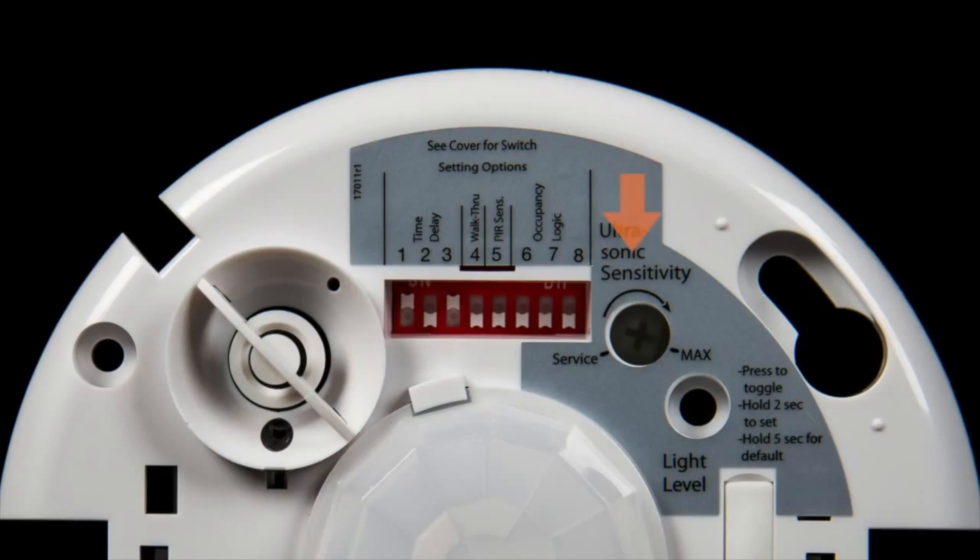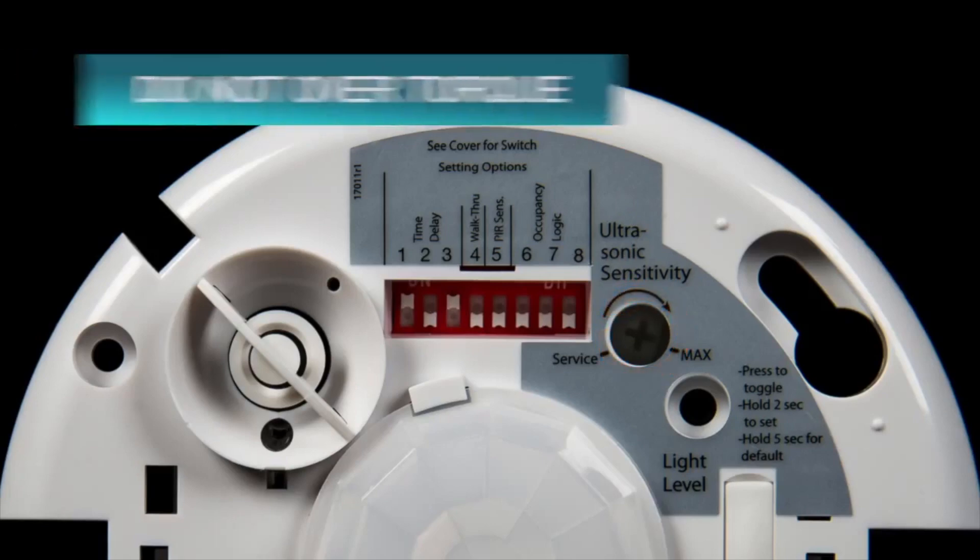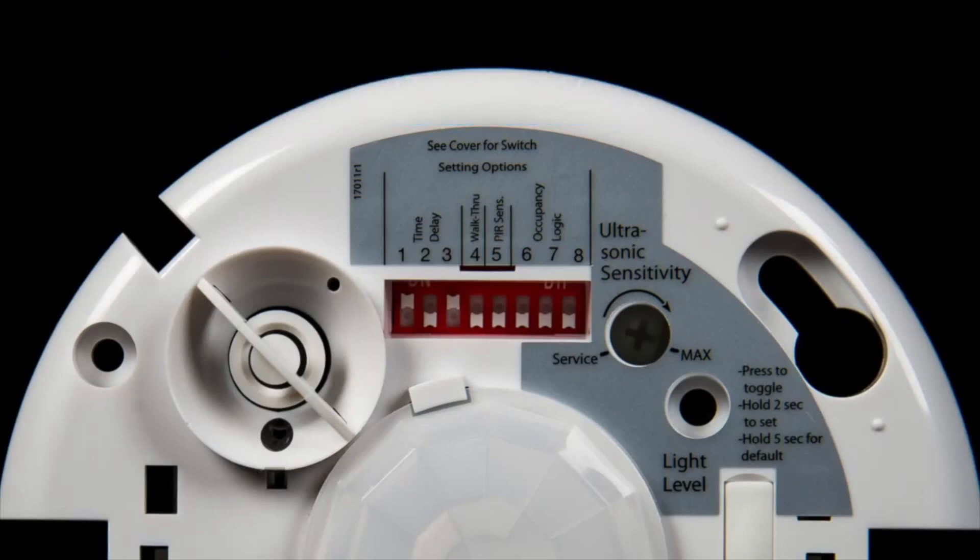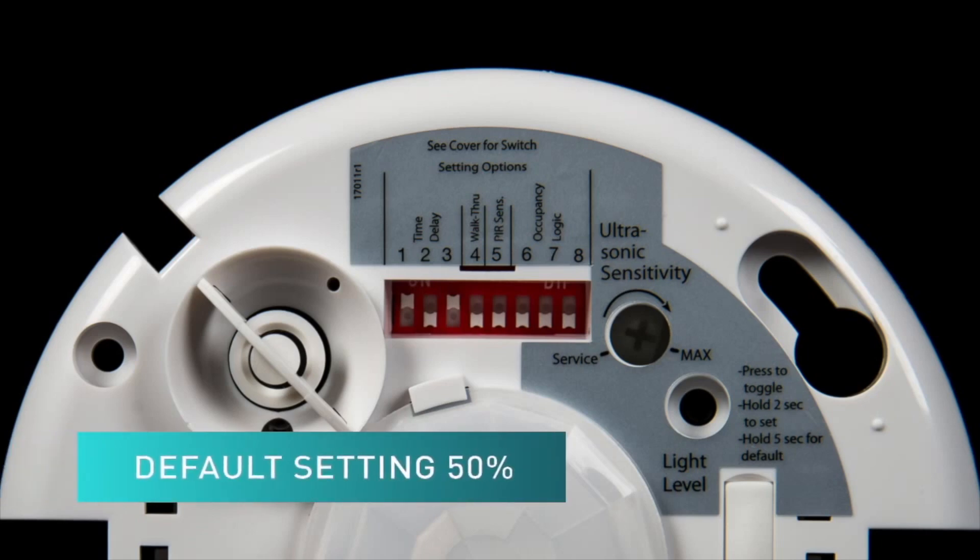It can be adjusted by turning clockwise for increased sensitivity or counterclockwise for decreased sensitivity. Please be sure not to over torque your device when adjusting. The default ultrasonic sensitivity is set to 50%, as it is appropriate for most applications.